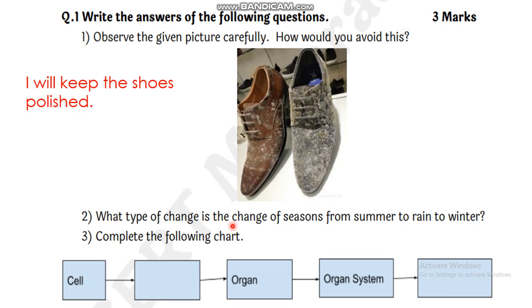Second question: What type of change is the change of seasons from summer to rain and rain to winter? What you have learned in changes - from summer to rain, rain and winter again. These types of changes are called periodic changes. This is the first step.